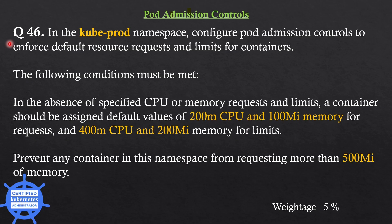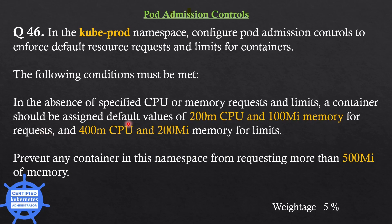The next question is: in the QPROD namespace, configure pod admission controls to enforce default resource requests and limits for containers. The following conditions must be met. In the absence of specified CPU or memory requests and limits, a container should be assigned default values of 200 millicore CPU and 100 megabytes memory for requests, and 400 millicore CPU and 200 megabytes memory for limits. Prevent any container in this namespace from requesting more than 500 megabytes of memory.